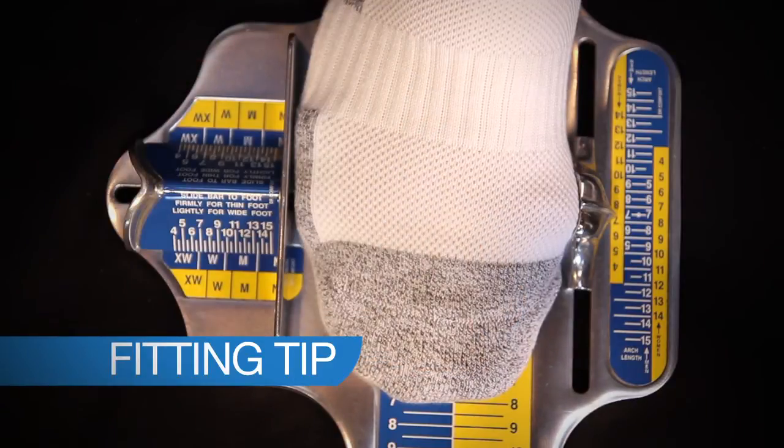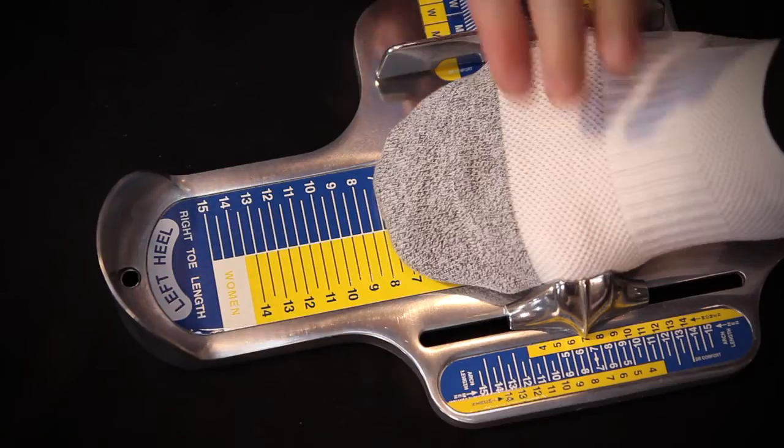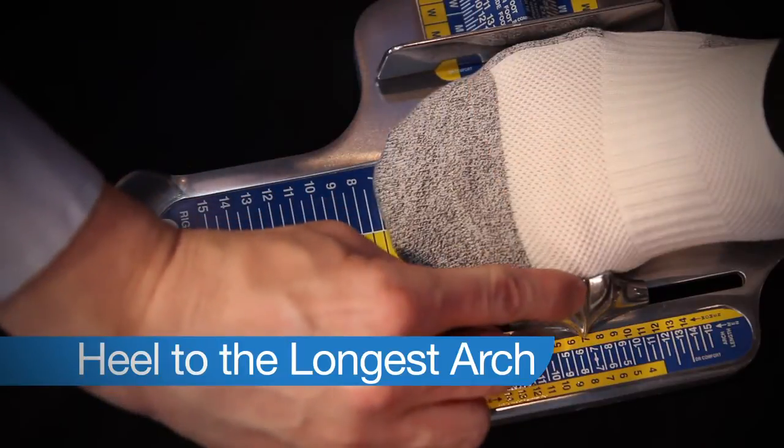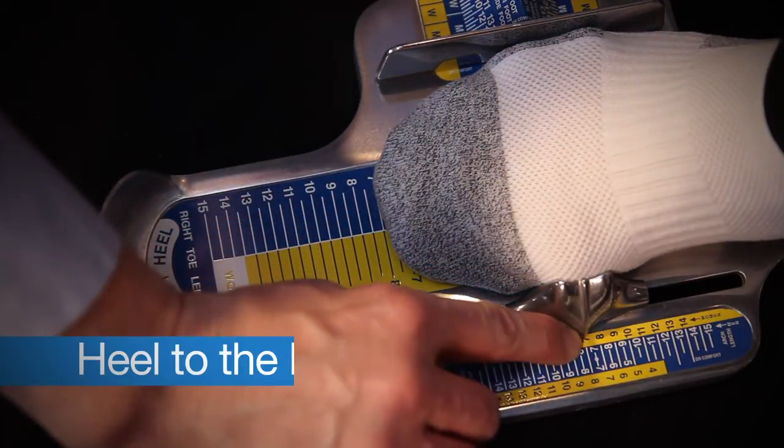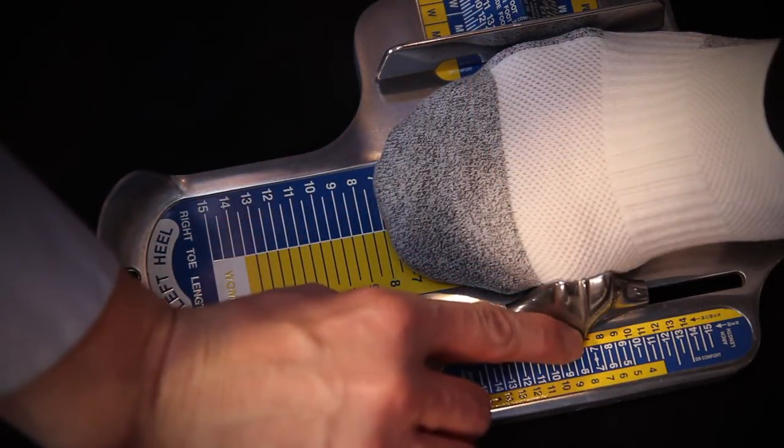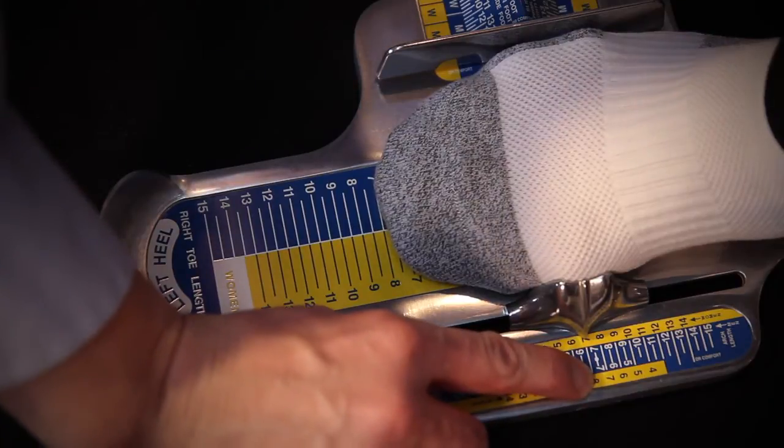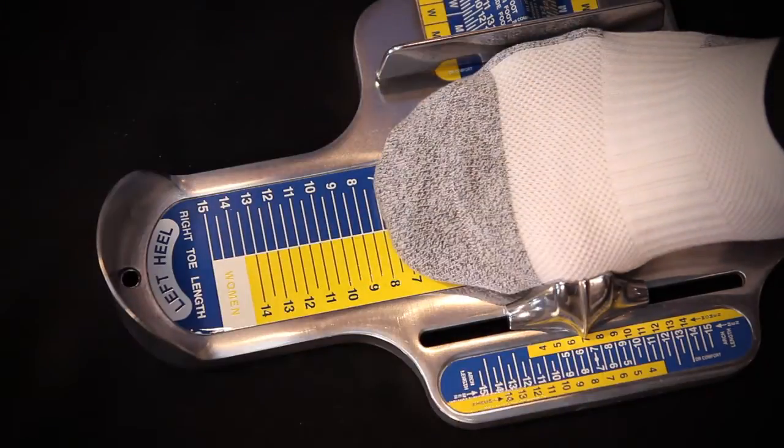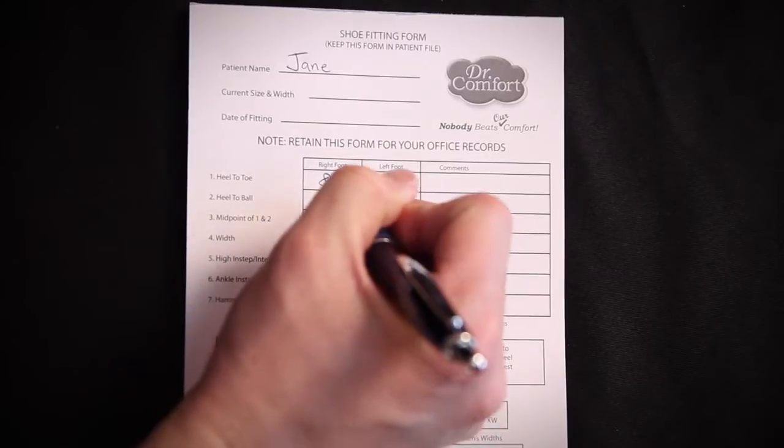Here's a fitting tip for this situation. If you come across a patient with their second toe longer than their first, measure to that digit. Next is the heel to the longest arch. The arch is also known as the metatarsophalangeal joint or the ball of the foot. Again, reading numbers facing me and in yellow, because Jane is a woman, I'm going to read that that indicator is a size 8.